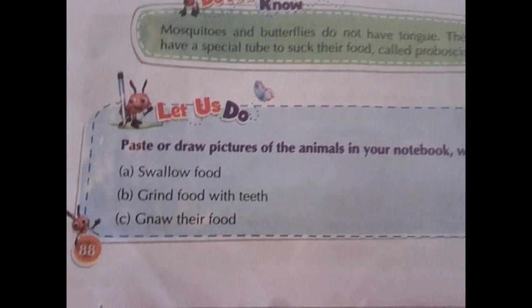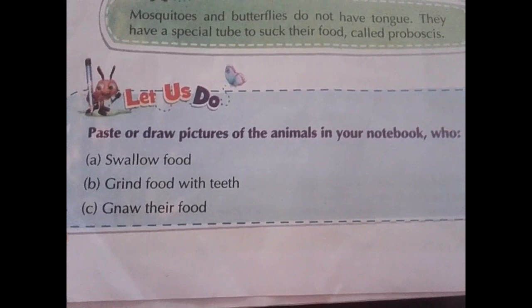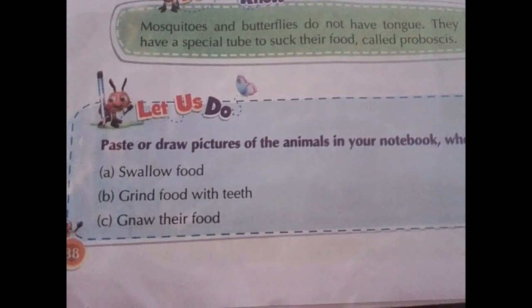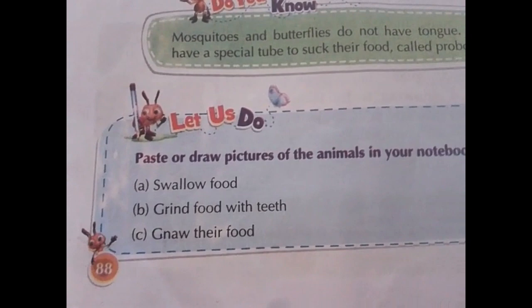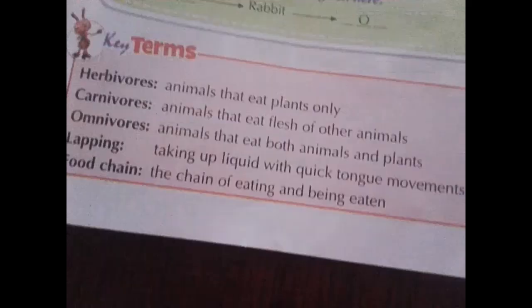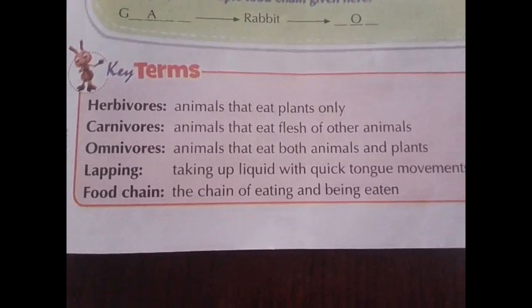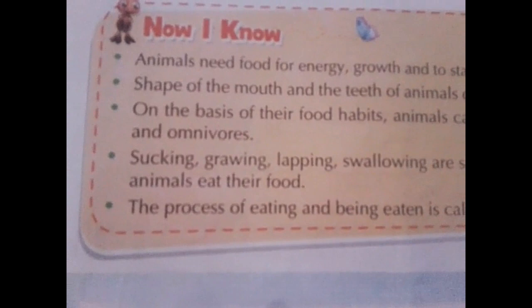In page number 88, for the 'Let Us Do' activity, paste and draw pictures of animals in your notebook. For example: animals that swallow food — lizard and frog; animals that grind food with teeth — tiger and cow; animals that gnaw their food — squirrel and rabbit. Also, in page numbers 89 and 90, you have key terms and 'Now I Know' points that you have to learn thoroughly.